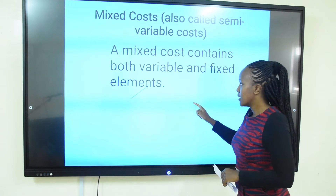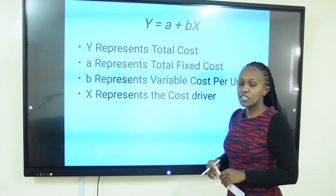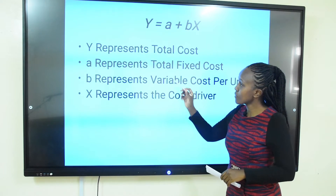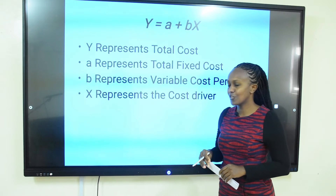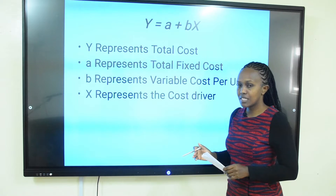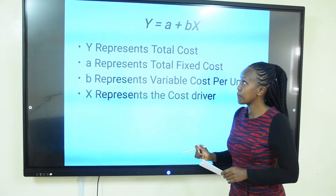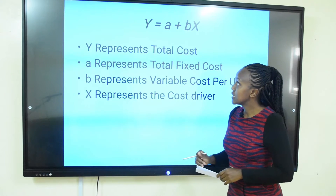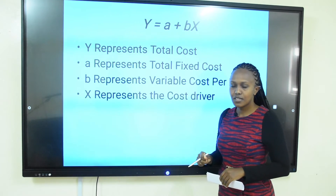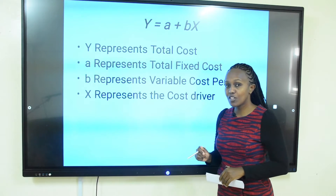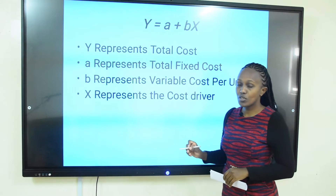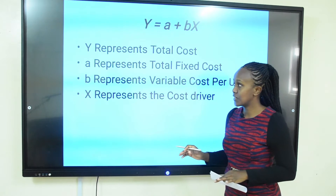The cost has to be a mixed cost. We are going to estimate a cost function of the form y = a + bx, where y represents the total cost — that is the total cost with both fixed and variable components. It is the dependent variable in this equation. We also have a, which represents the total fixed cost. It is constant within the relevant range.